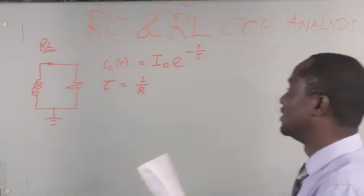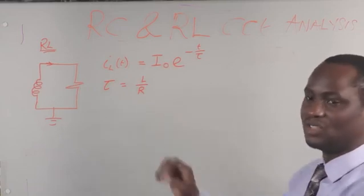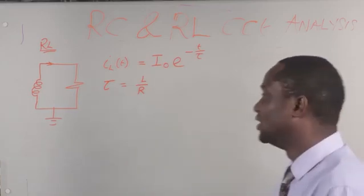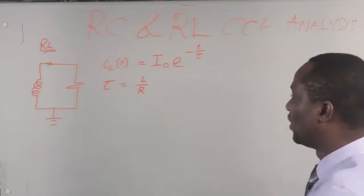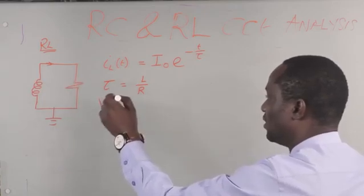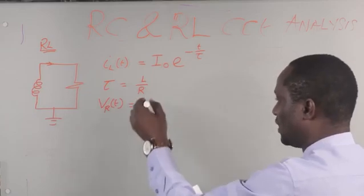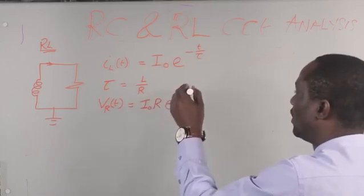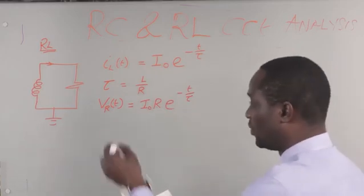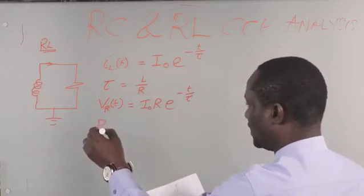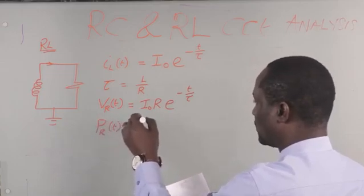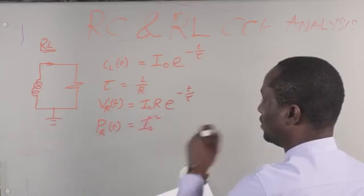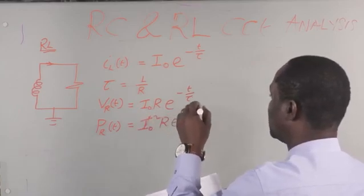When you have RL circuits, this is how we find tau, the time constant. The definition is the same: the time it takes for the response to decay to approximately 37% of the initial value. We can also find the voltage drop across the resistor, Vr, over a period of time, which is expressed as I₀ multiplied by R, then exponential minus t over tau. Similarly, the power dissipated in the resistor is I₀² R multiplied by exponential minus 2t over tau.